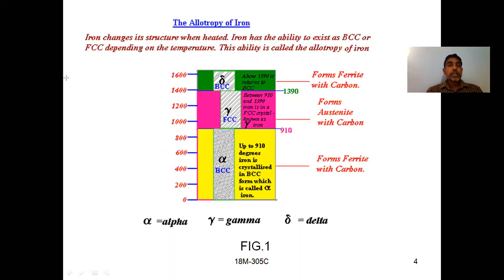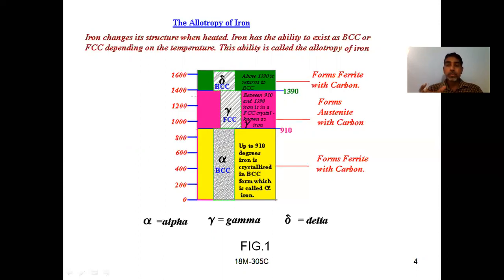We are discussing polymorphism and allotropy. What is meant by polymorphism? If a material has more than one crystal structure at different temperatures, that physical phenomenon is known as polymorphism.